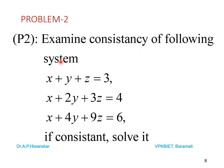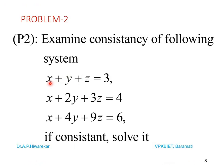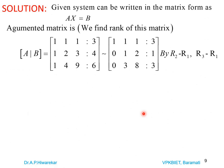Problem 2: Examine the consistency of x + y + z = 3, x + 2y + 3z = 4, x + 4y + 9z = 6; if consistent, solve it. The augmented matrix is [1, 1, 1 | 3; 1, 2, 3 | 4; 1, 4, 9 | 6]. We want to reduce to echelon form by making the below-diagonal entries zero.